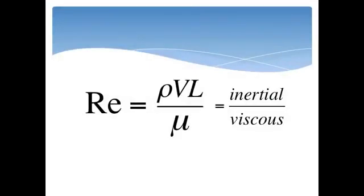Reynolds number is equal to the density times the velocity times the characteristic length over the viscosity of the fluid. Its significance is the ratio of inertial forces to viscous forces on a fluid element.